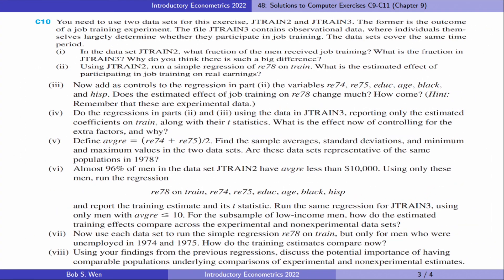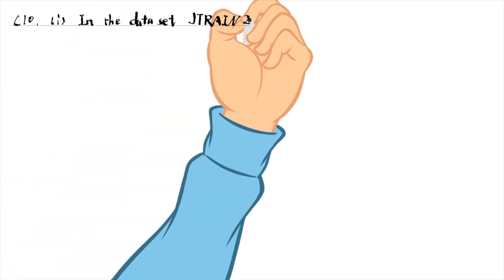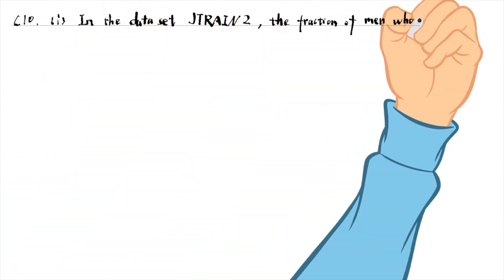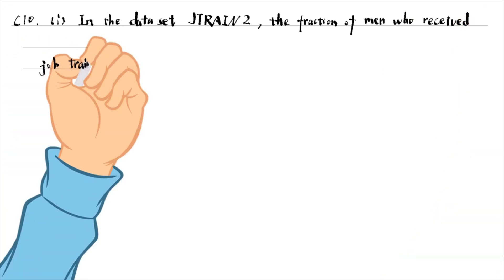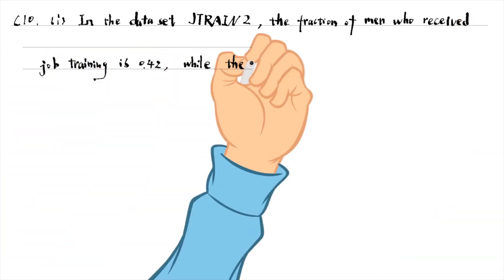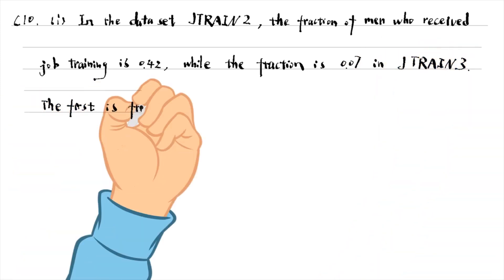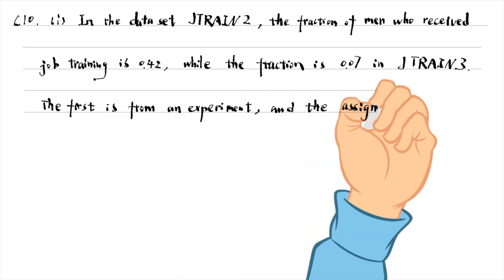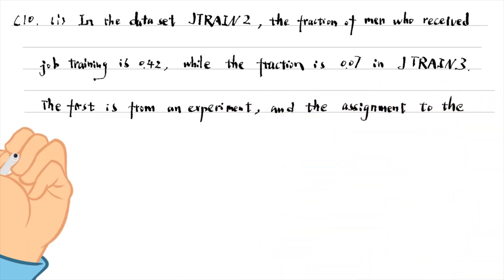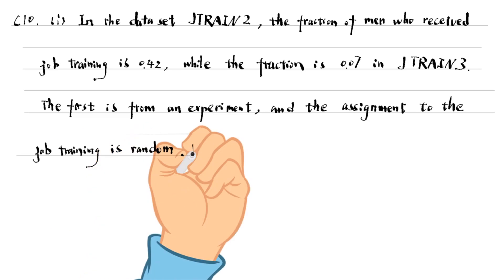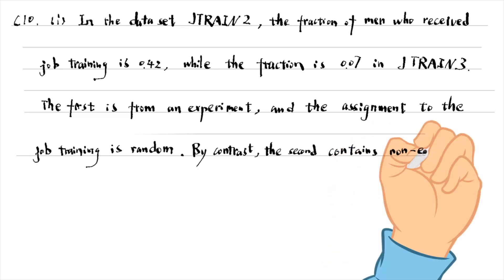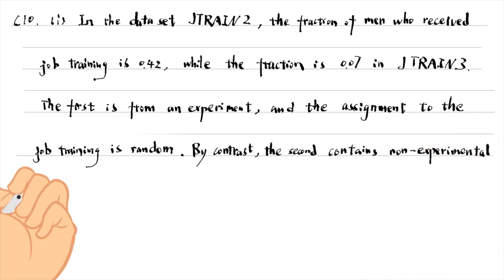Let's do computer exercise 10. In the first data set, the fraction of men who received job training is 0.42, while the fraction is 0.07 in the second data set. As mentioned in the exercise, the first is from an experiment, and the assignment to the job training is random — they are experimental data. By contrast, the second contains non-experimental data, or observational data.